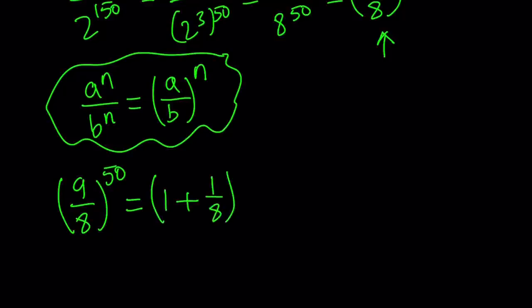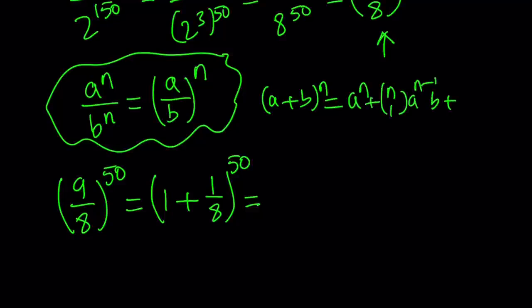Binomial theorem to the rescue. Whenever you have something larger than, slightly larger than 1, you can always think about the binomial theorem because 9 over 8 can be written as 1 plus 1 over 8, and then raised to the 50th power. Now we can use the binomial theorem. Don't worry about this whole thing because there's going to be 51 terms. We're not going to expand the whole thing. We don't need to do that. You'll see in a little bit, we only need a couple terms.